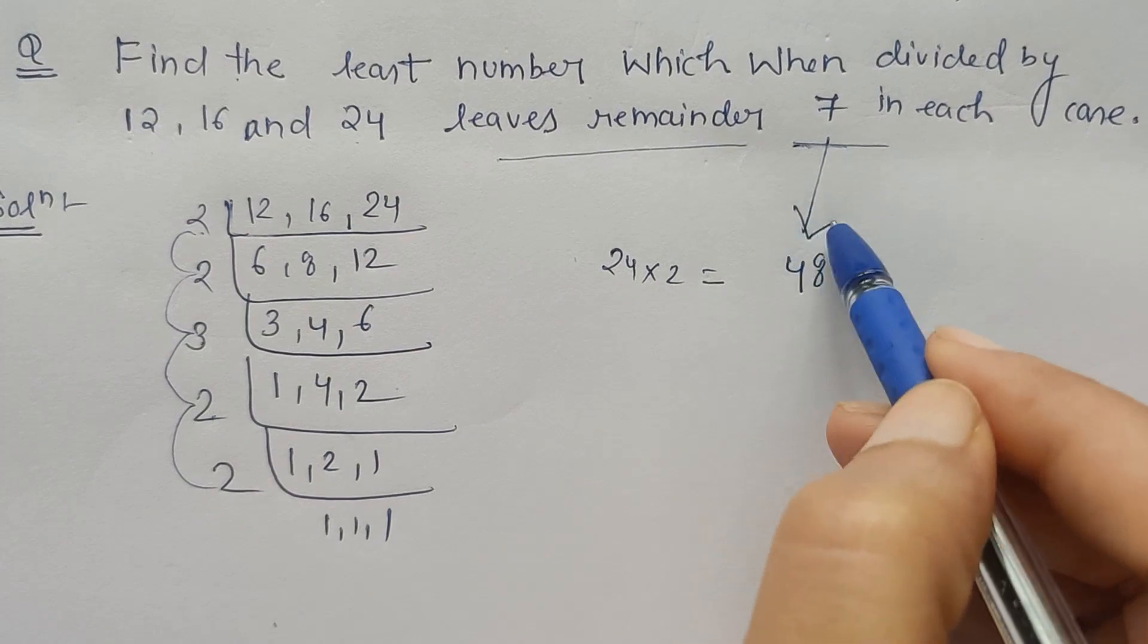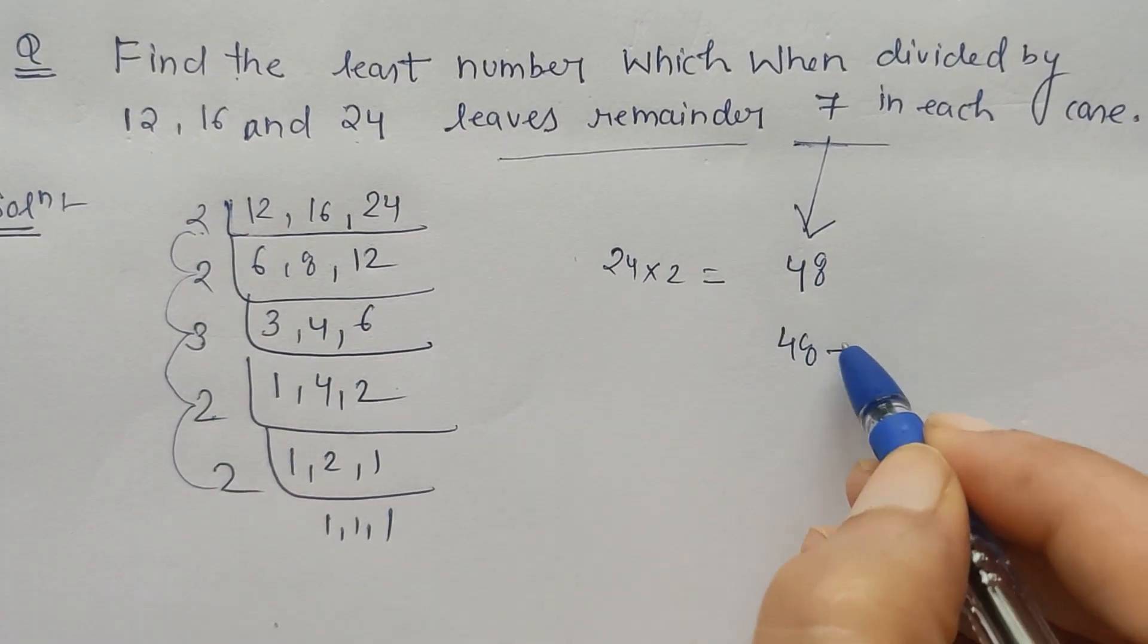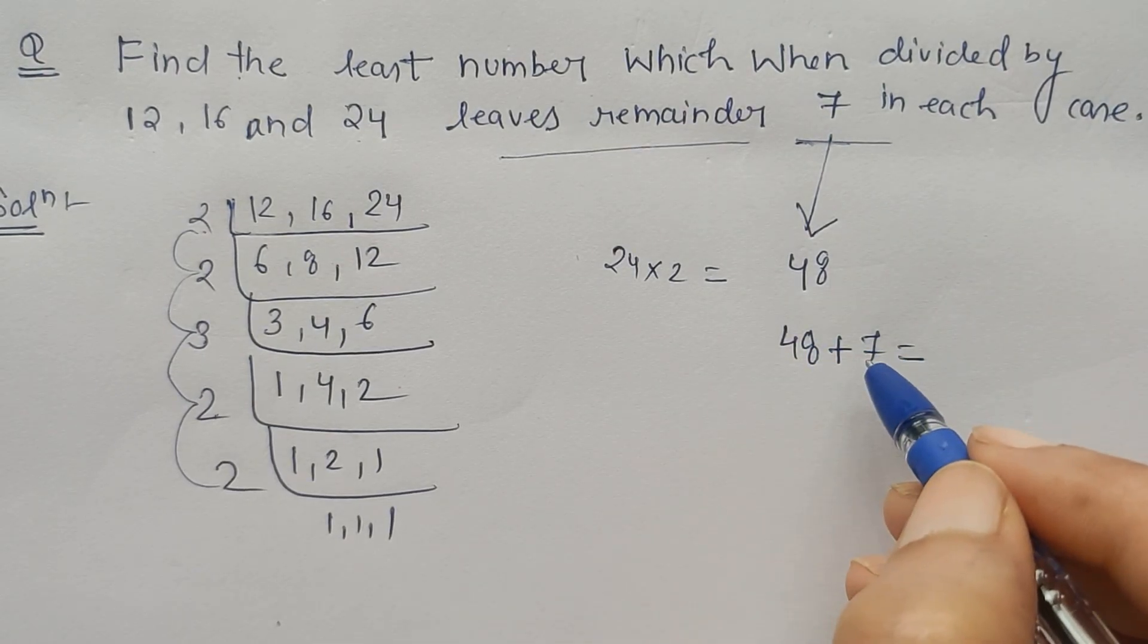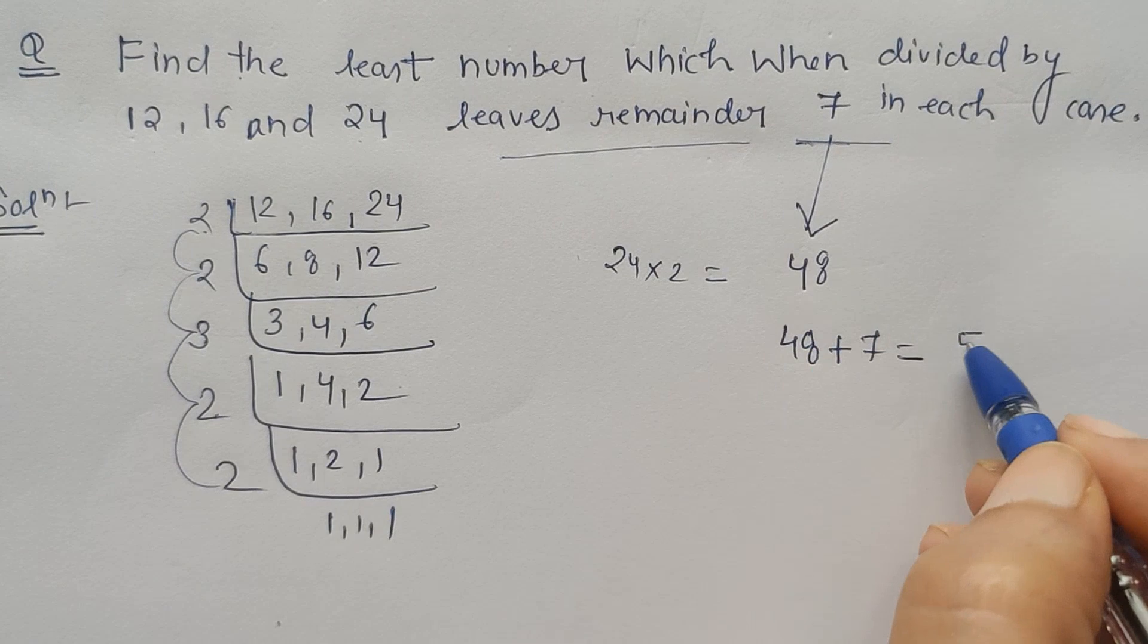This remainder to the LCM. So 48 plus 7, how much do we get? 55.